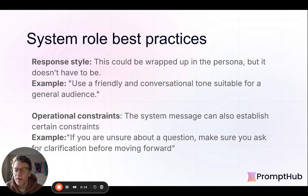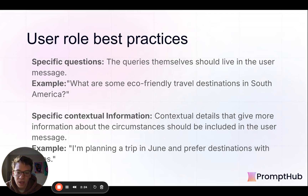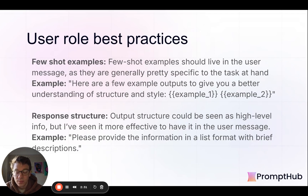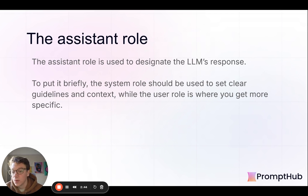Then the user role — that's where you get more specific, more low-level, closer to the actual problem you want the LLM to solve. So specific questions, specific contextual information — if you're using few-shot examples, this is where those would go. And if you have a certain response structure you want, like bullet points or something else, this is also where that information would go because it's much more specific. The assistant role is just what the LLM responds with.